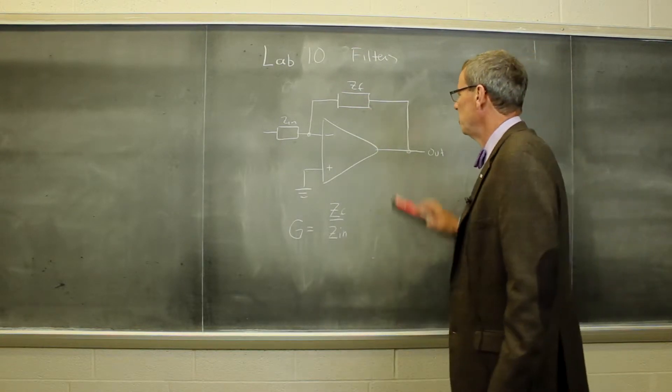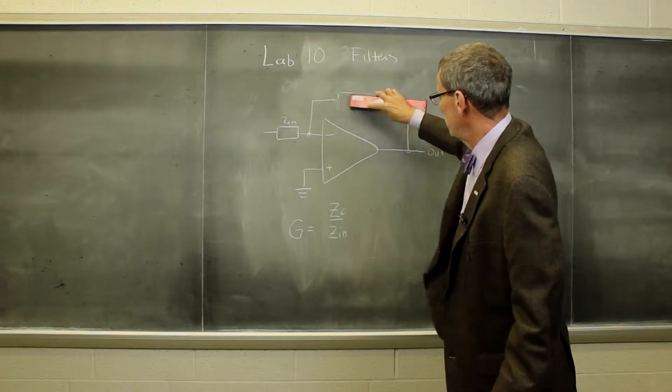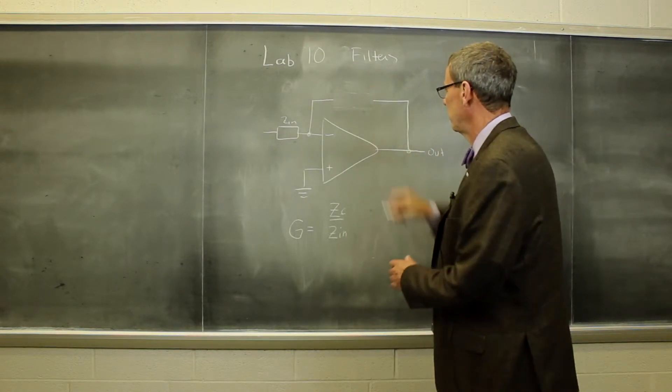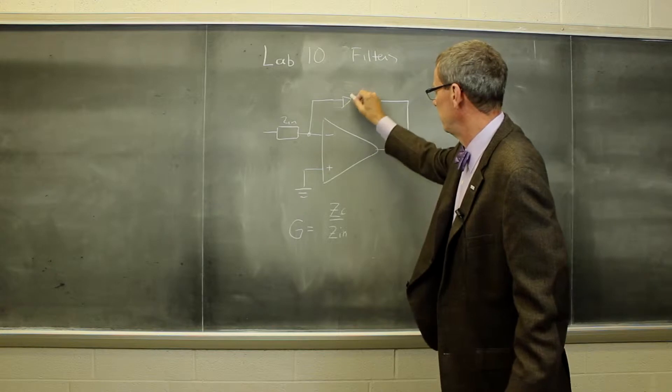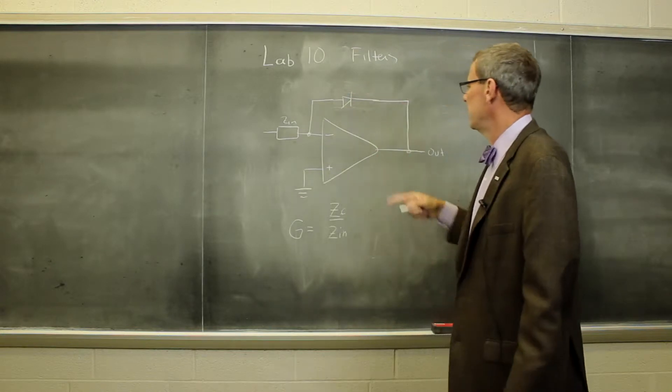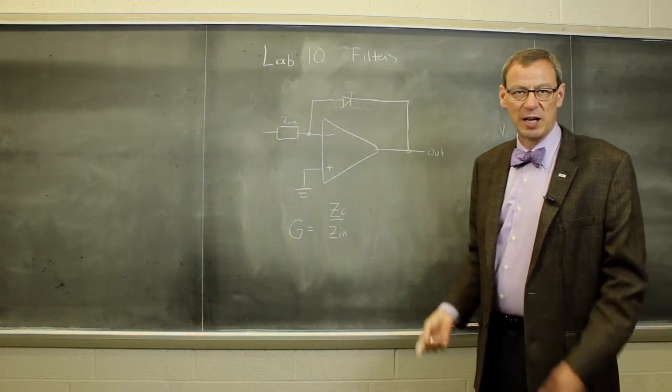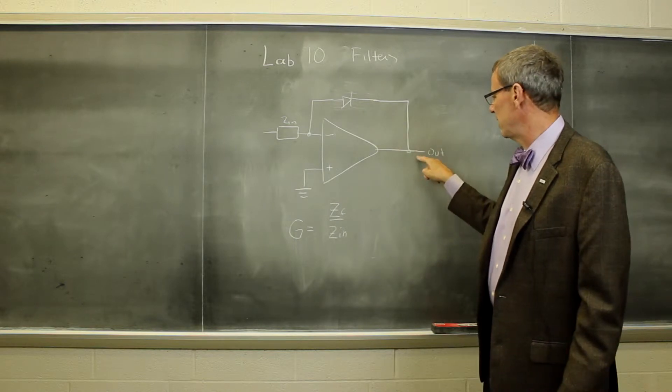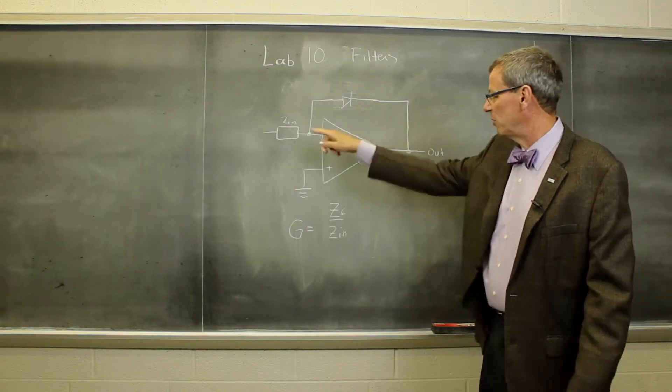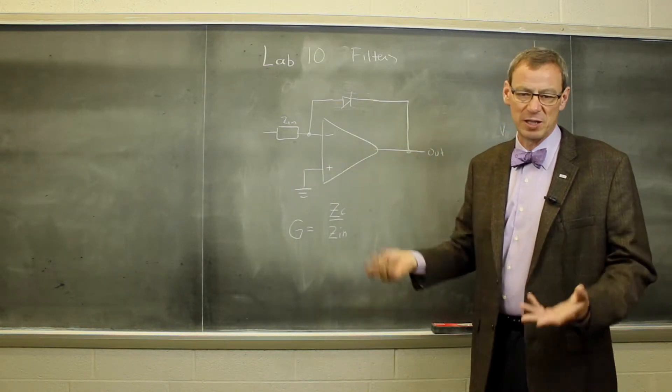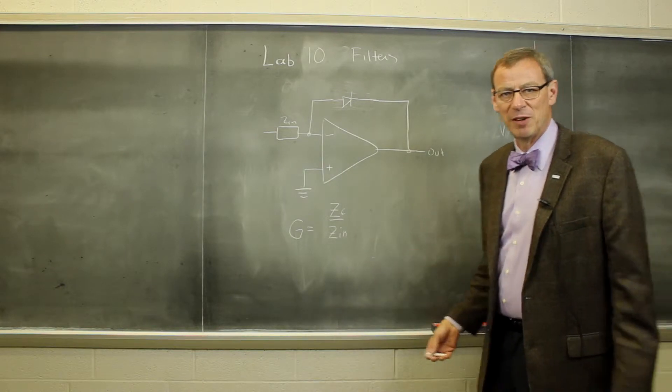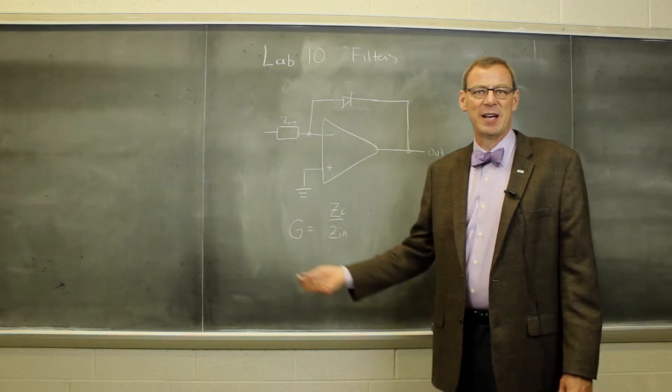One other thing we'll do here is we don't even have to just put impedances there. We'll look at a circuit where we put a diode there. And the diode has an exponential IV curve, and so that leads to a logarithmic dependence of the output voltage on the input voltage. So we'll measure this logarithmic amplifier in the lab as well. So now let's go down to the lab and have a look at these.